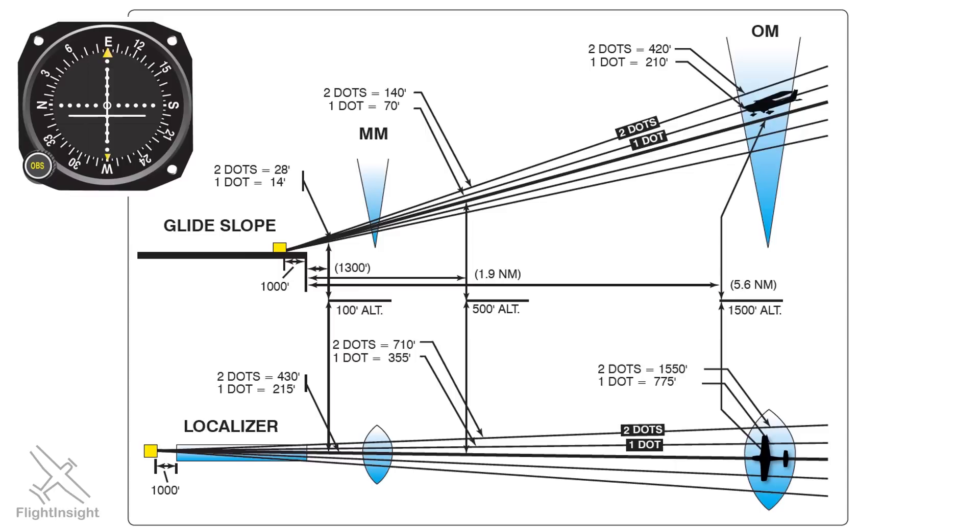If the aircraft also moves right of center, two dots off at the outer marker, it will be 1550 feet off. The test will ask us about this position either by mentioning it as 5.6 miles out or at 1500 feet altitude. Keeping the same degree of deflection, we fly inbound and the scale narrows. We get to 1.9 miles out or 500 feet altitude, and now the deflection is shorter. Even though the needles are showing the same thing, we're only 70 feet high and 710 feet off to the right.